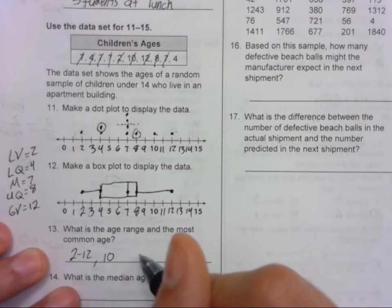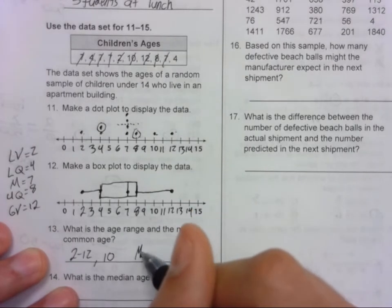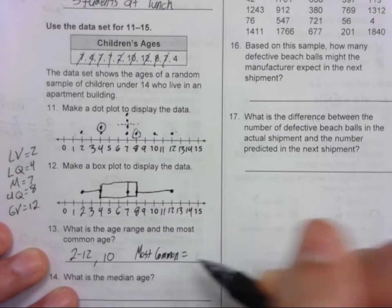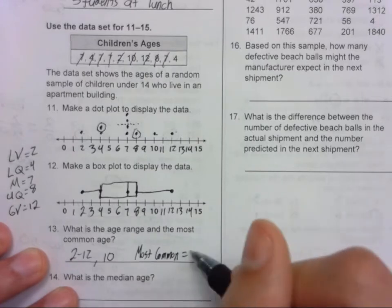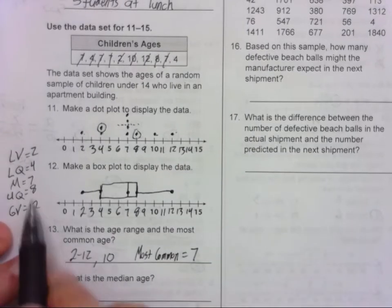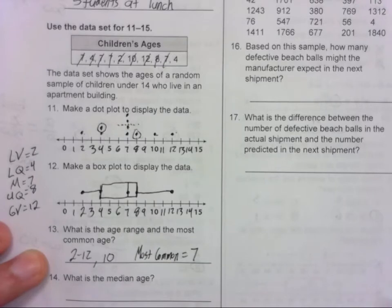And what's the most common age? So the most common age is 7. Under number 14. What's the median age? Median age is 7.